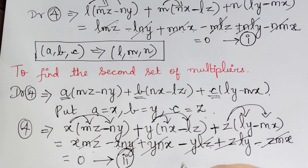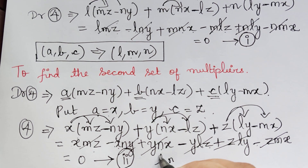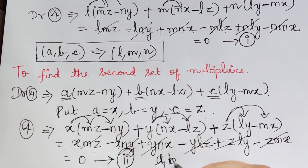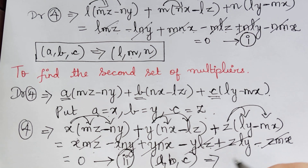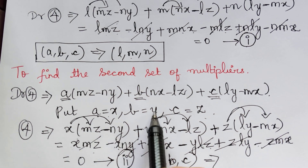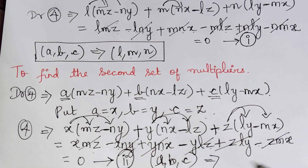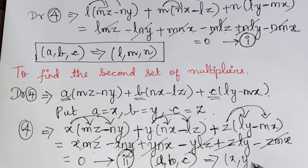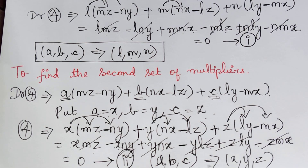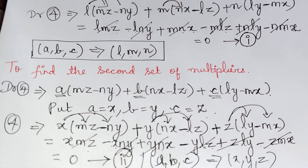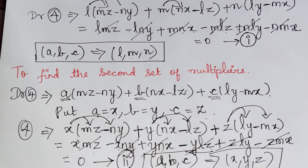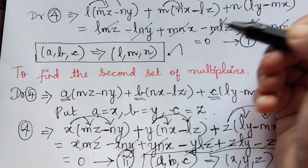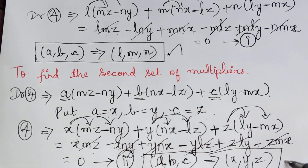So we have now decided the two sets of multipliers to use for this problem: the first set is (l, m, n) and the second set is (x, y, z). We shall now proceed further to find the solutions u and v.